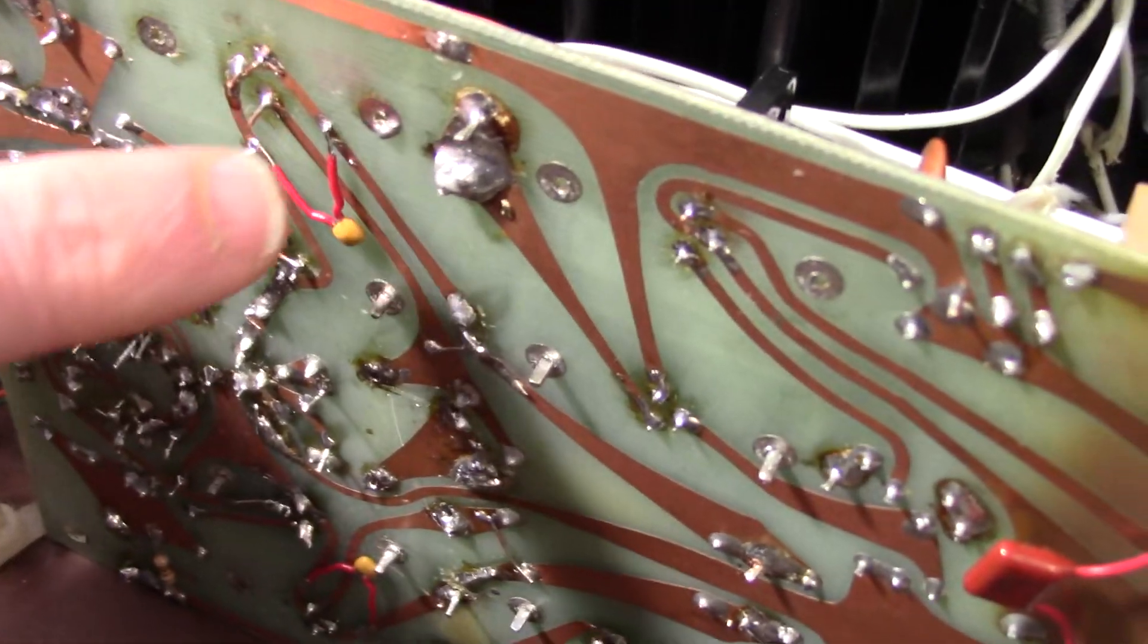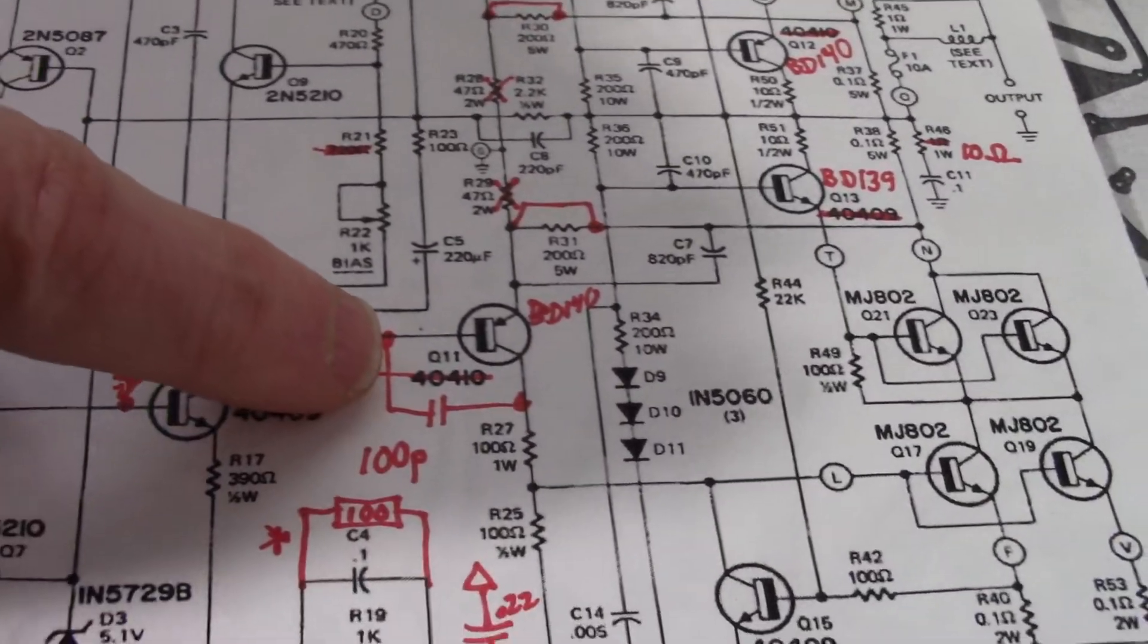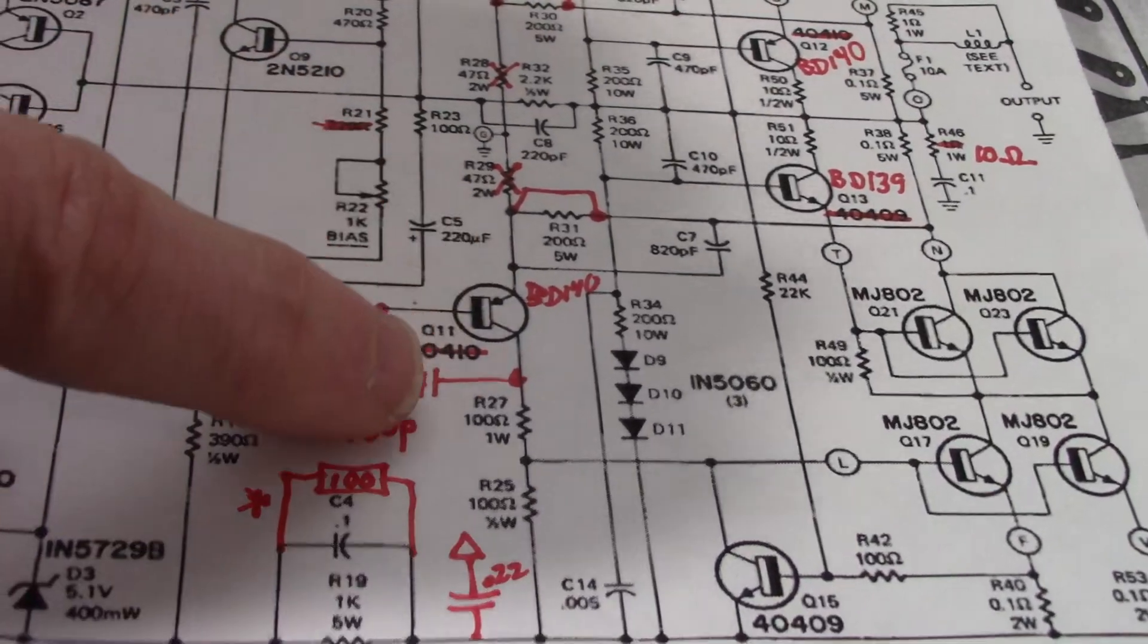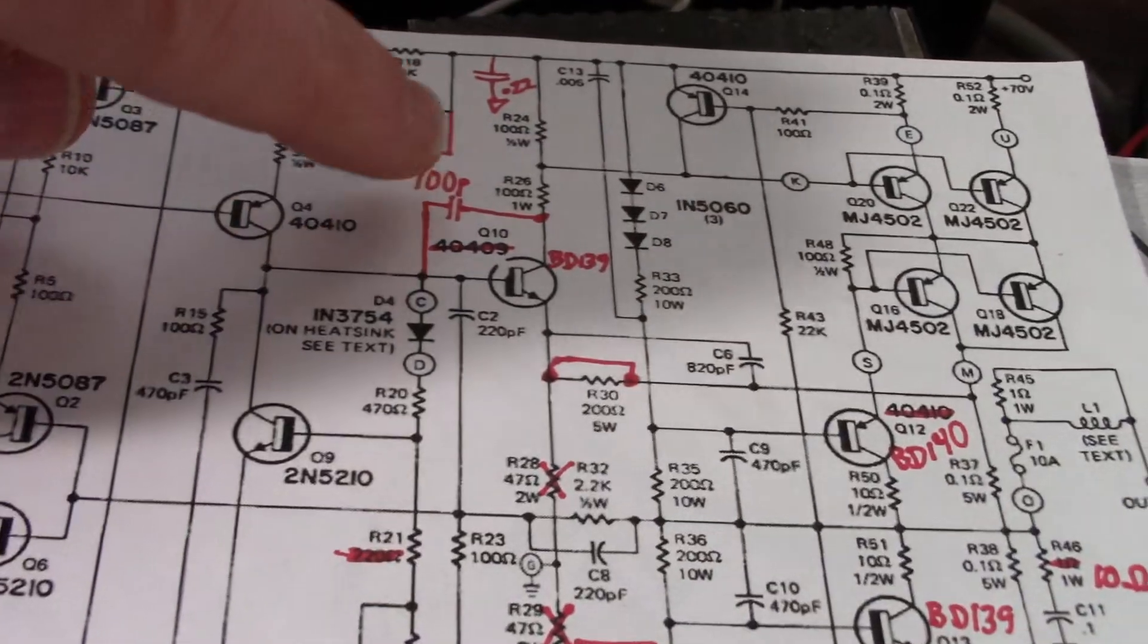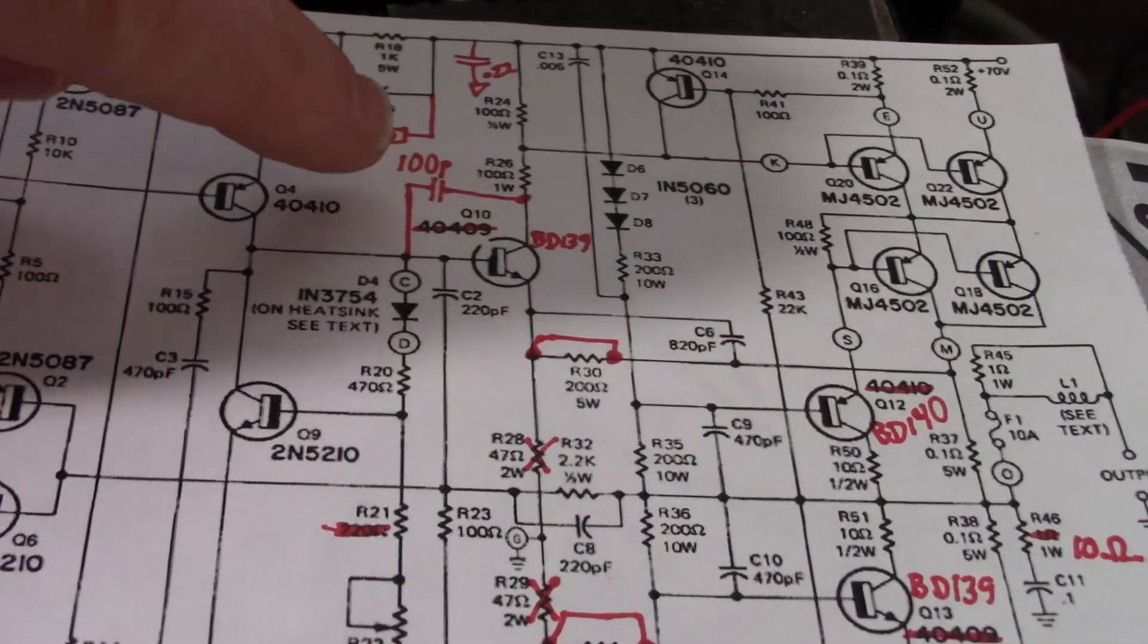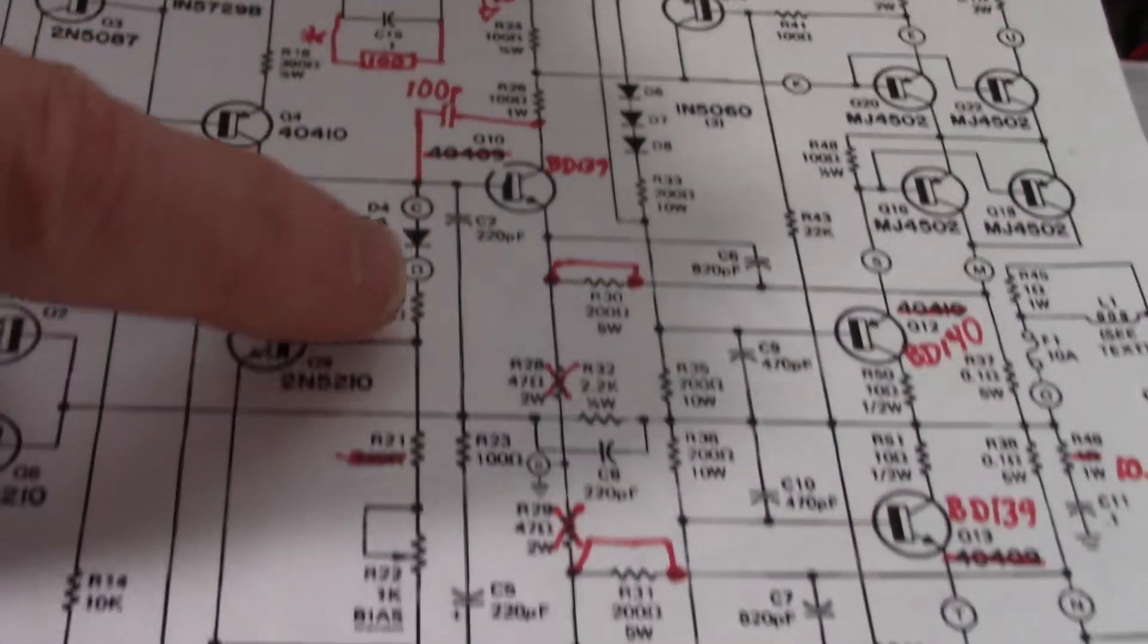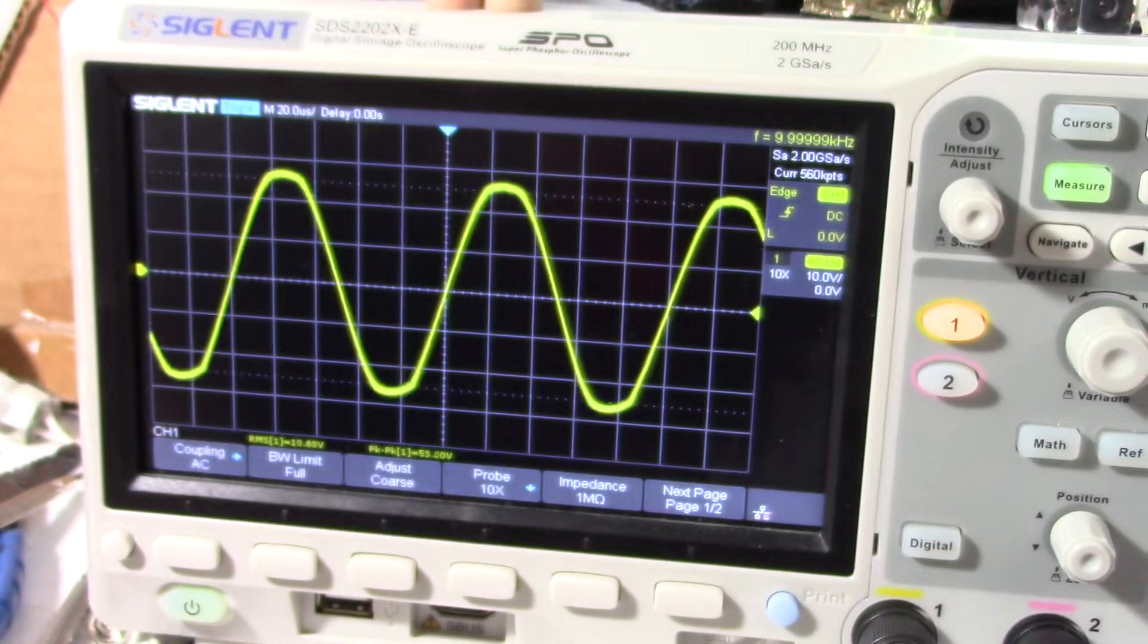So, what I did next is add these base-to-collector caps on the drivers. You'll see that often in complementary feedback pairs, because they tend to be less stable than emitter followers, that you will need to add these caps like this. And you want to add the minimum value that works. So, I used 100 picofarads. And I can run it into hard clipping, no more oscillation.